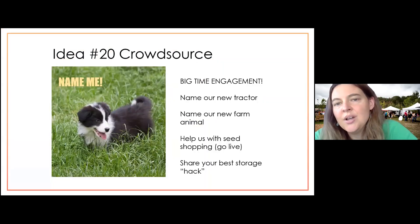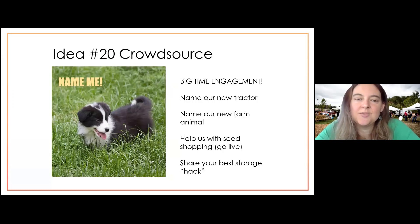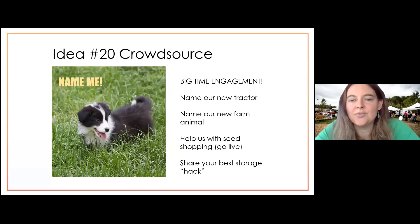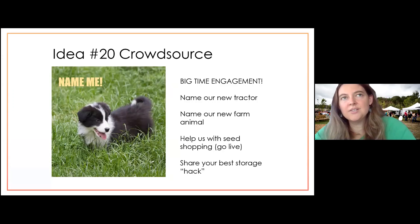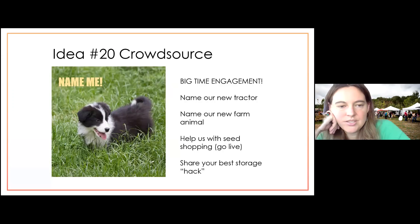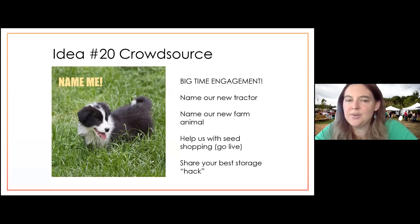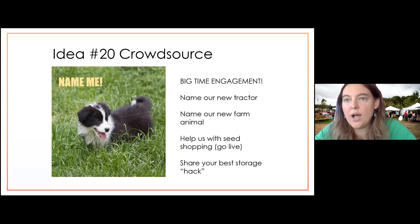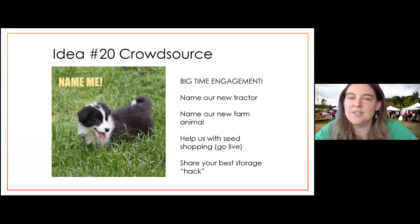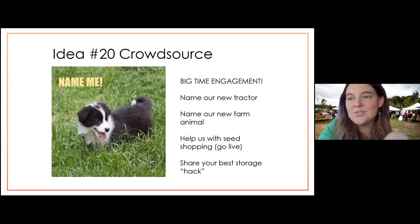The second-to-last idea is crowdsourcing — inviting interaction and actually asking for it is an obvious way to get engagement. For example, if you have a new horse or a new cow that's born, ask your followers to name it. That's going to do two things: get engagement up with your customers, and Facebook and Instagram will take notice that your business is getting a lot of engagement and interaction, which may cause them to show your business to more customers. The algorithms do seem to prioritize pages that get a lot of engagement.